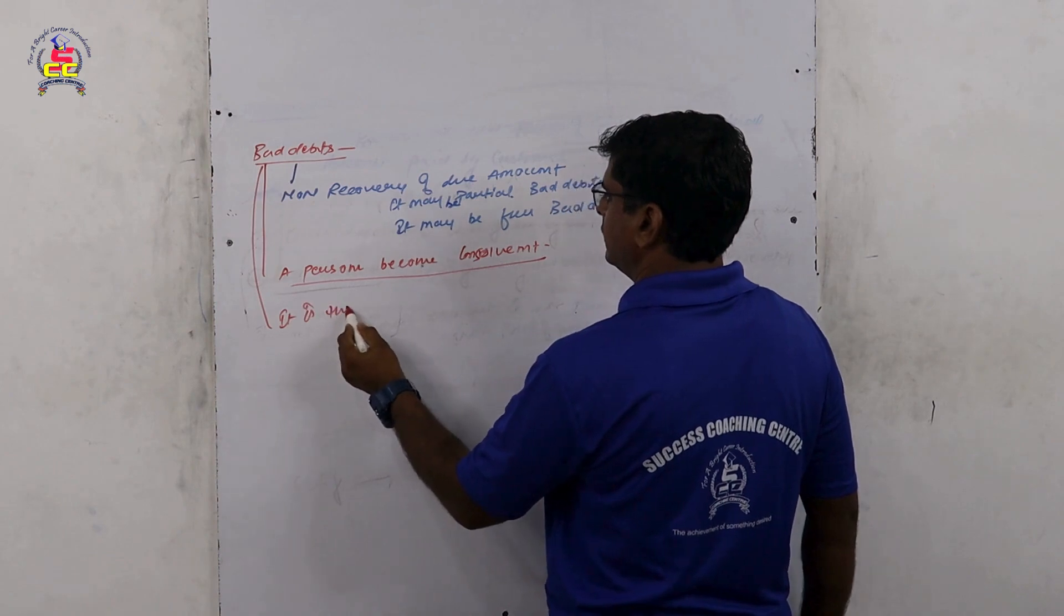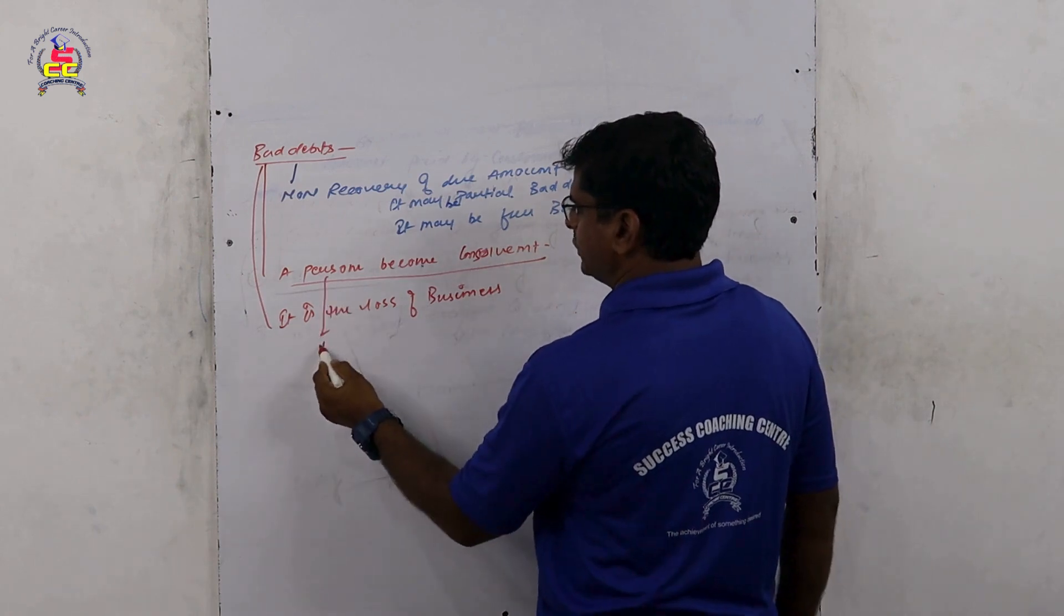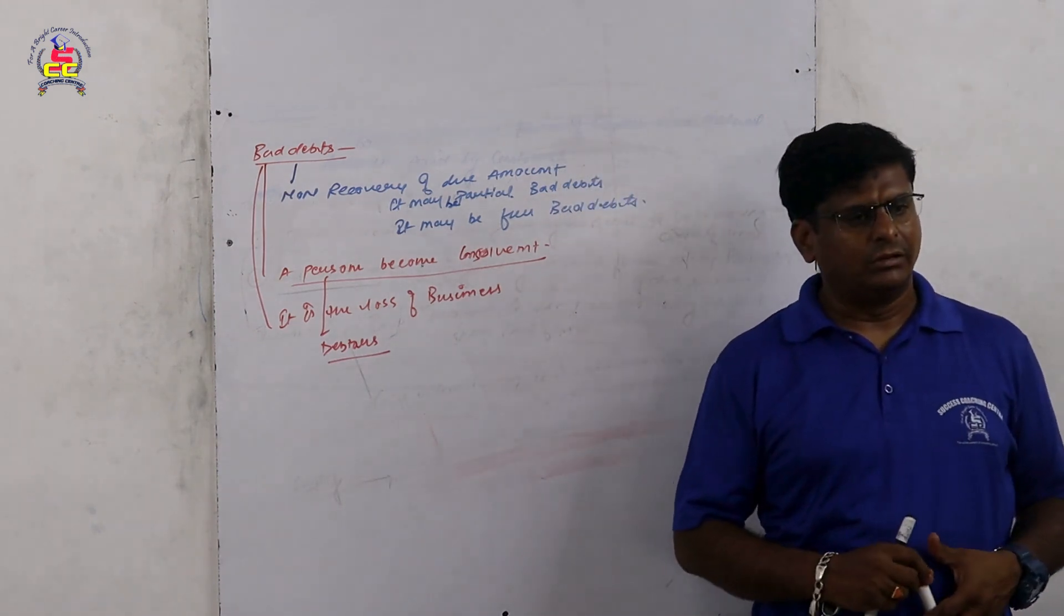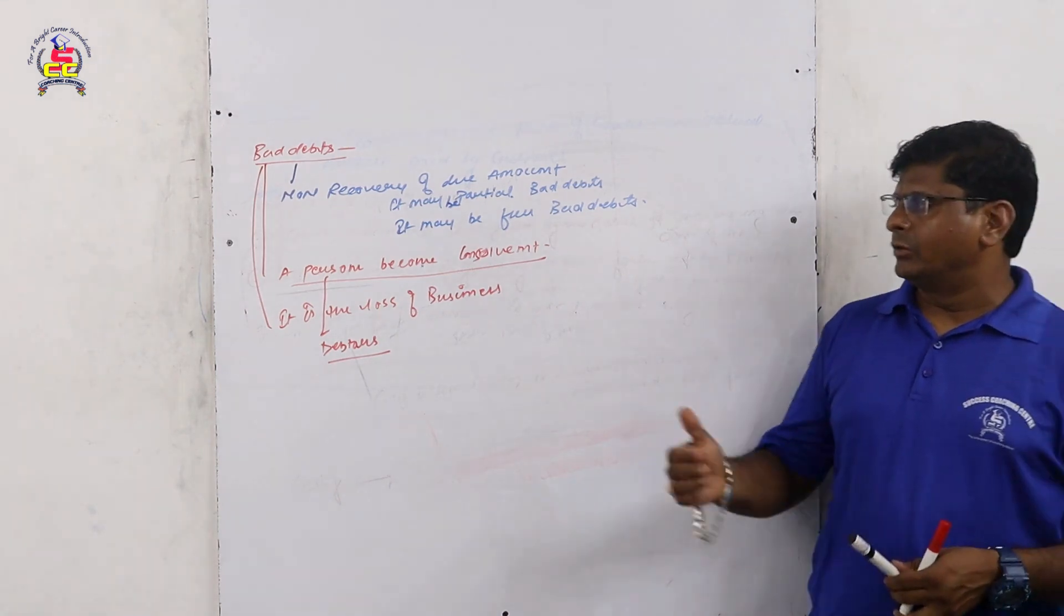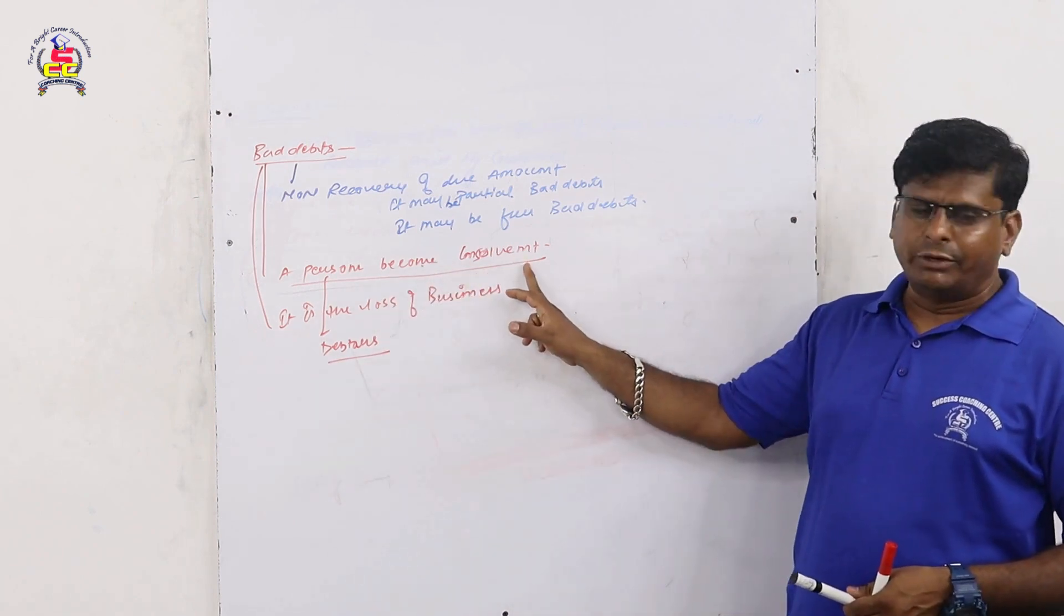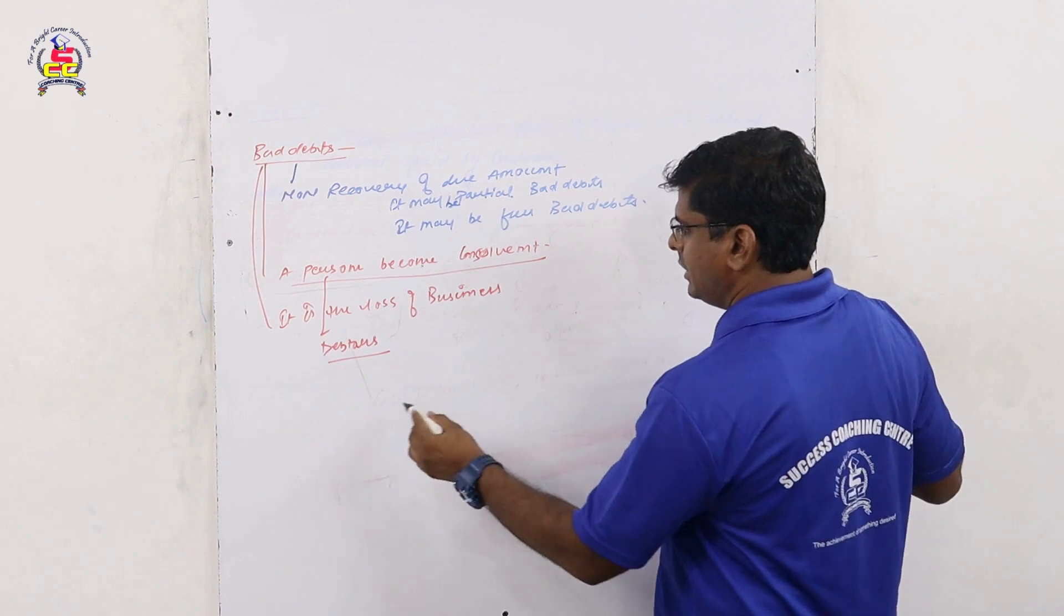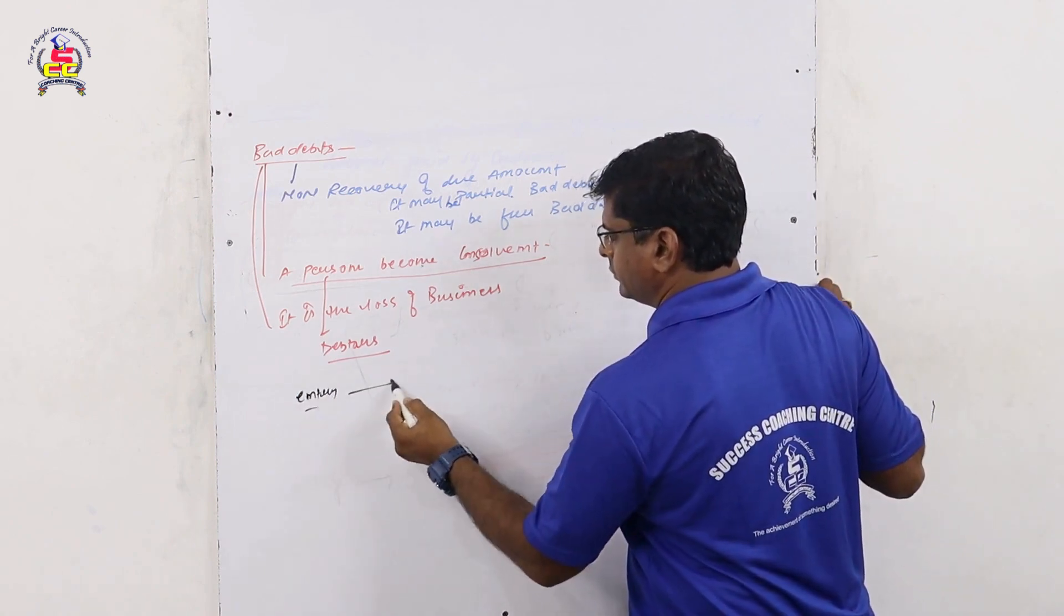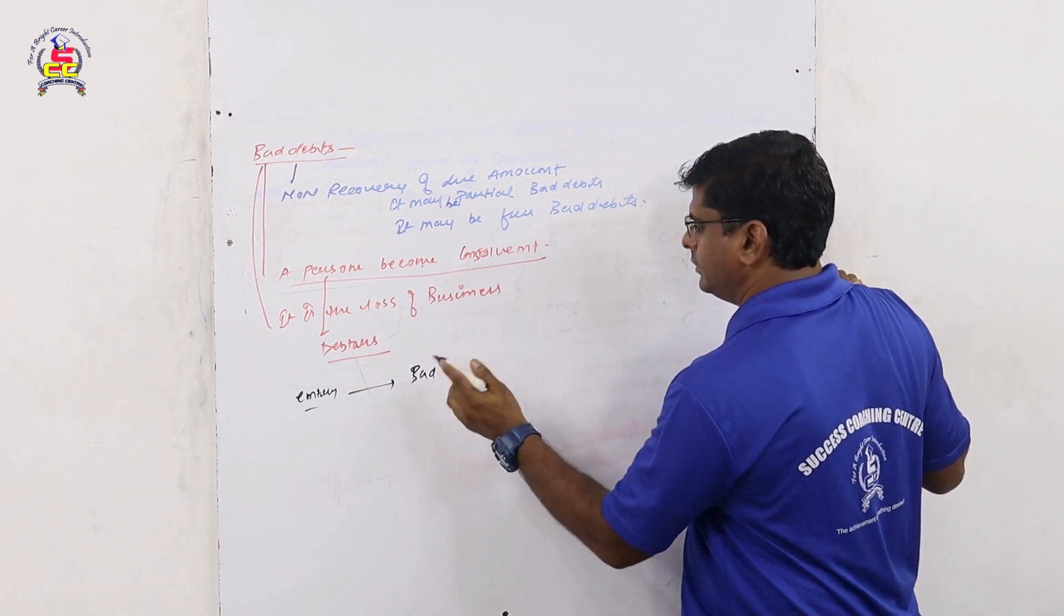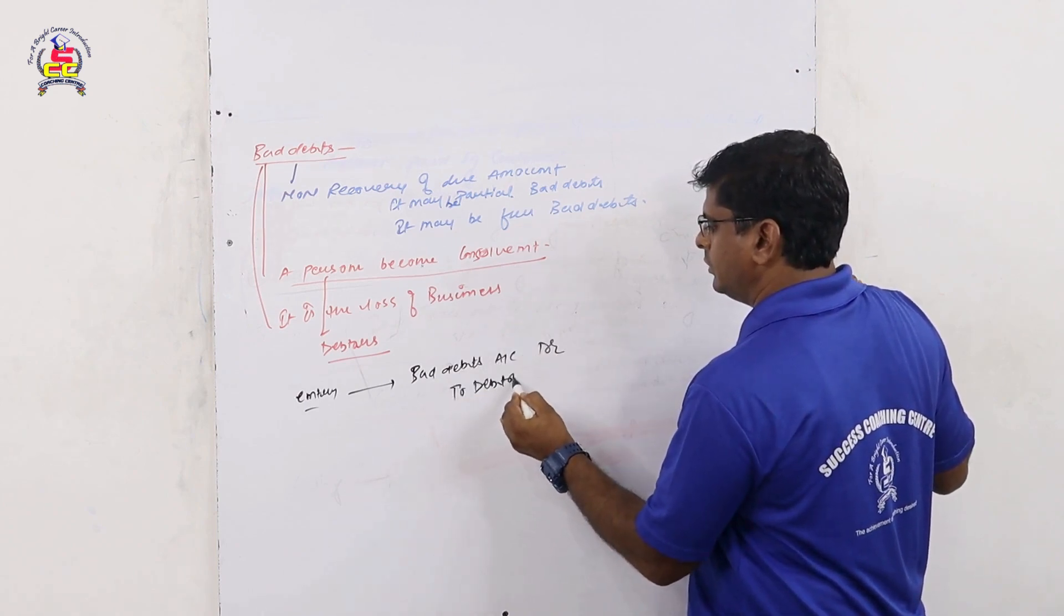It is a loss of business. What do we mean? We don't have credit. And if the credit is correct, then the credit is not worth the credit. We will debit bad debts account, credit to bank debts account.